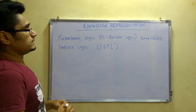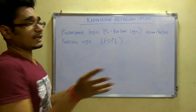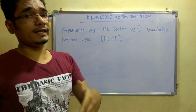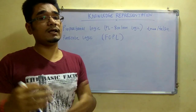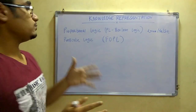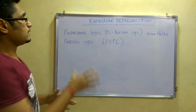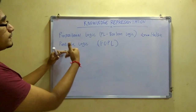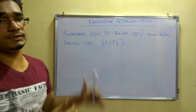Next is predicate logic, also called first-order predicate logic. It has three main types: first argument, second argument, and third argument. Predicate logic is a superset of propositional logic — everything that comes under propositional logic is contained within predicate logic.